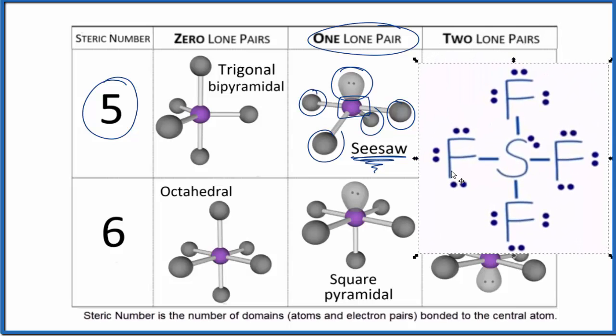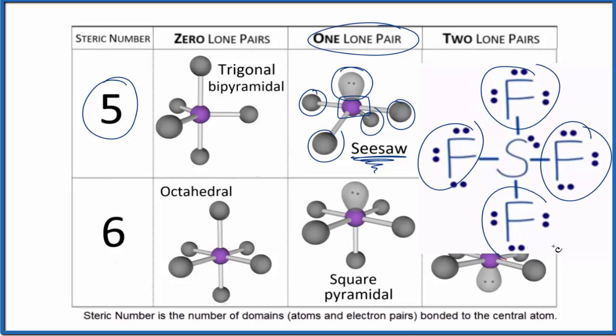So here's SF4, and we can see we have the four atoms, one, two, three, four, and then we see that lone pair right there. So five things and one of the things is a lone pair.